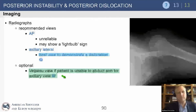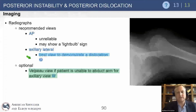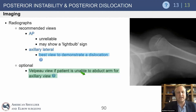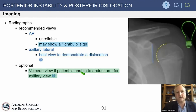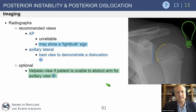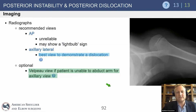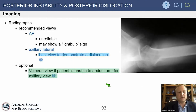Radiographs are very important with posterior instability, especially in the emergency department. The axillary lateral is the best view to demonstrate a dislocation — you can see a posteriorly dislocated shoulder, with the coracoid always pointing anteriorly confirming the humeral head is posterior. If the patient can't abduct the arm for an axillary view, obtain a Velpeau view. The 'light bulb sign' on AP indicates posterior subluxation or dislocation — the glenoid looks flat because the humerus is overlapping it posteriorly.